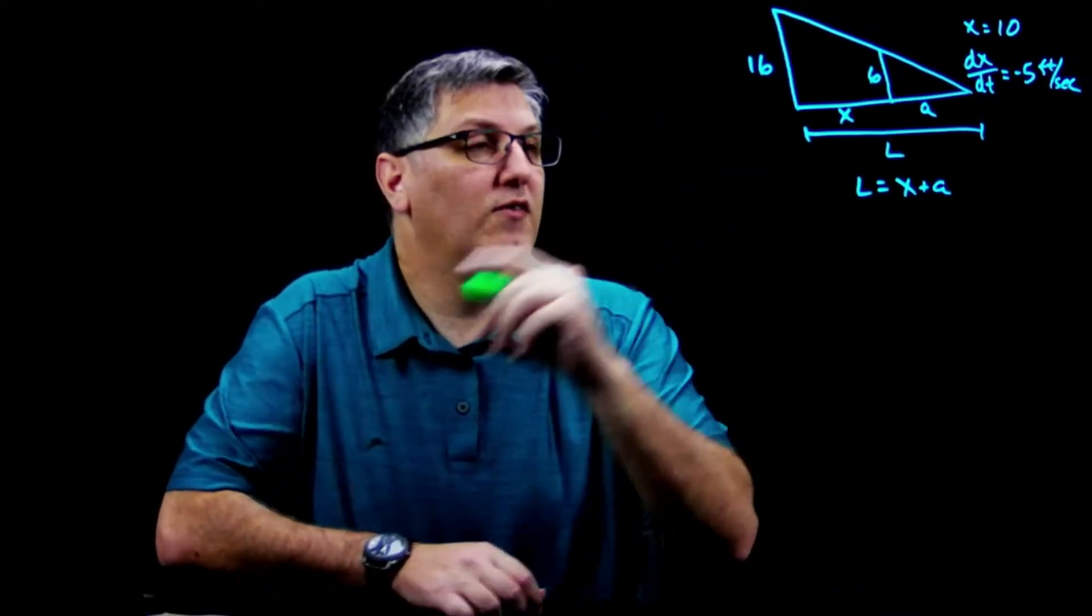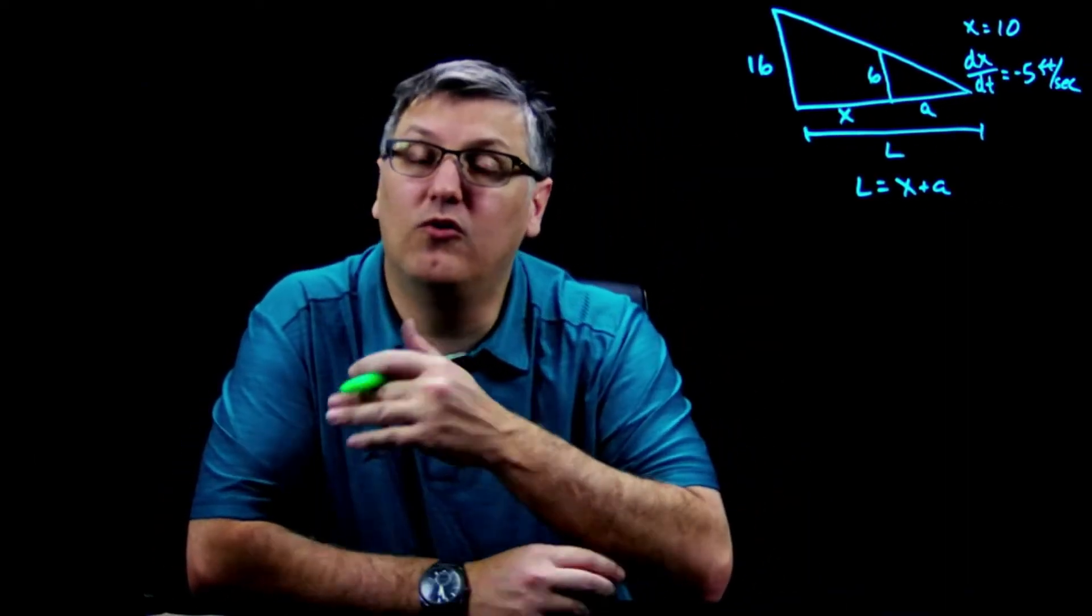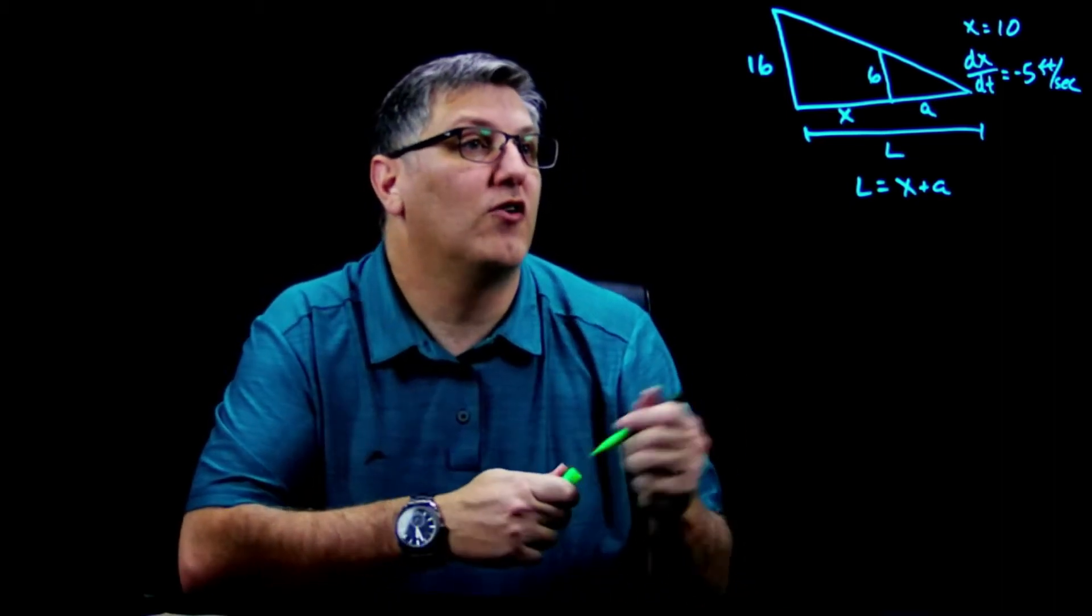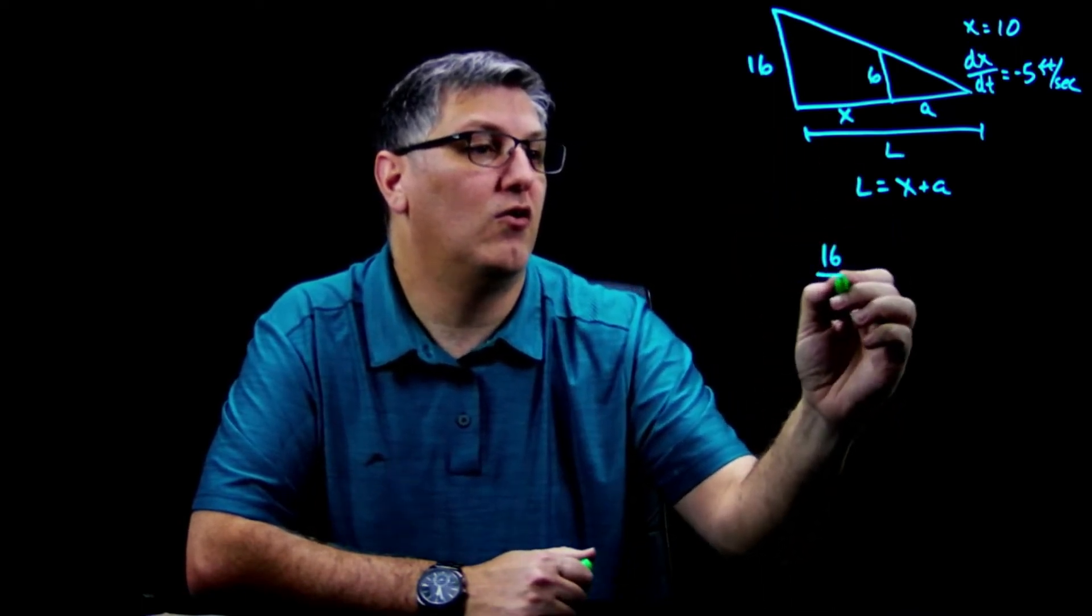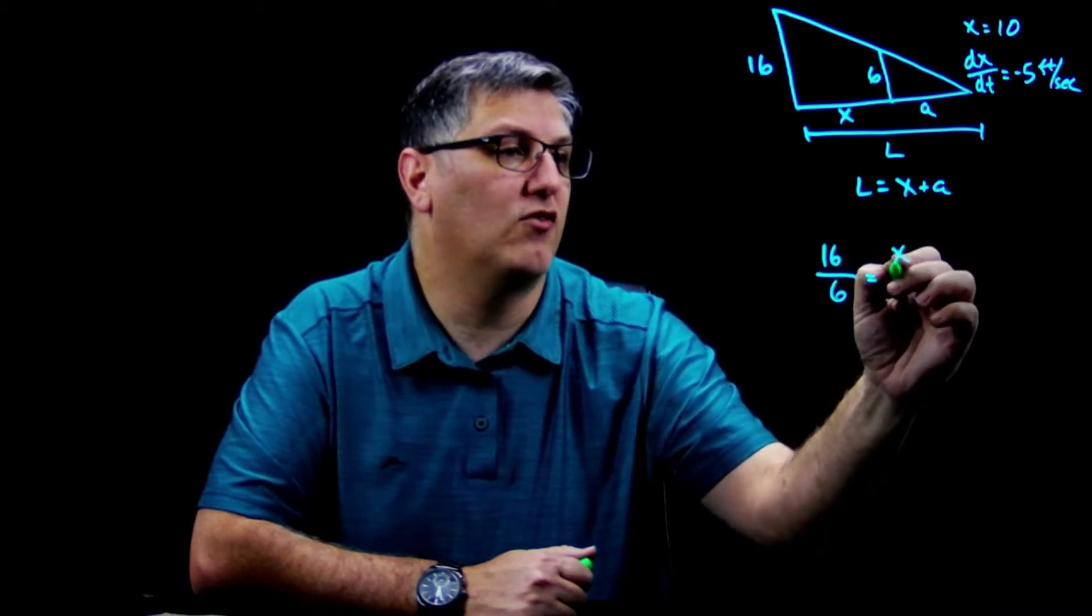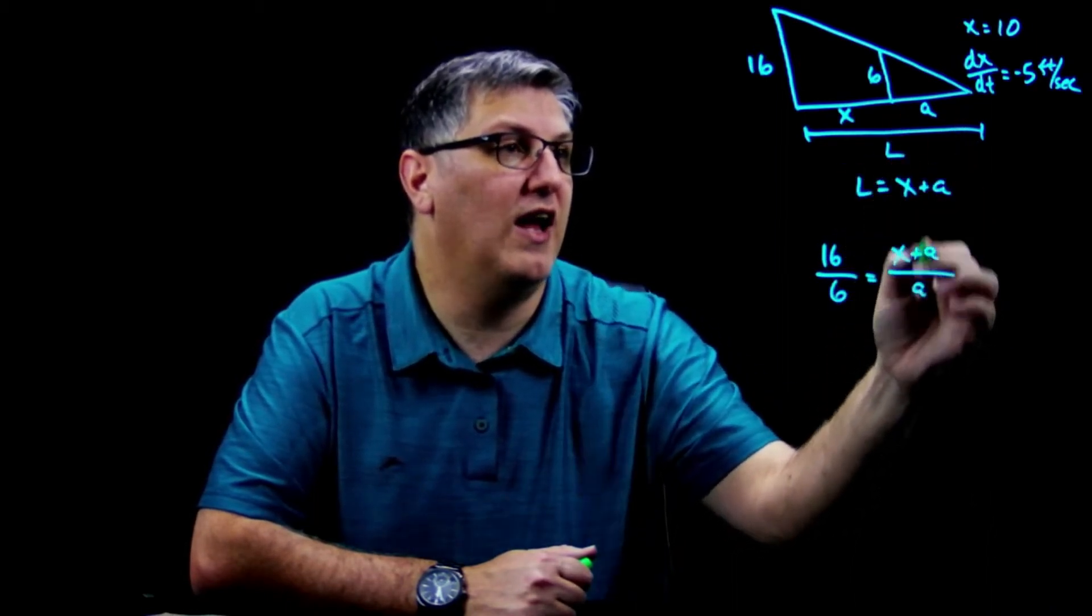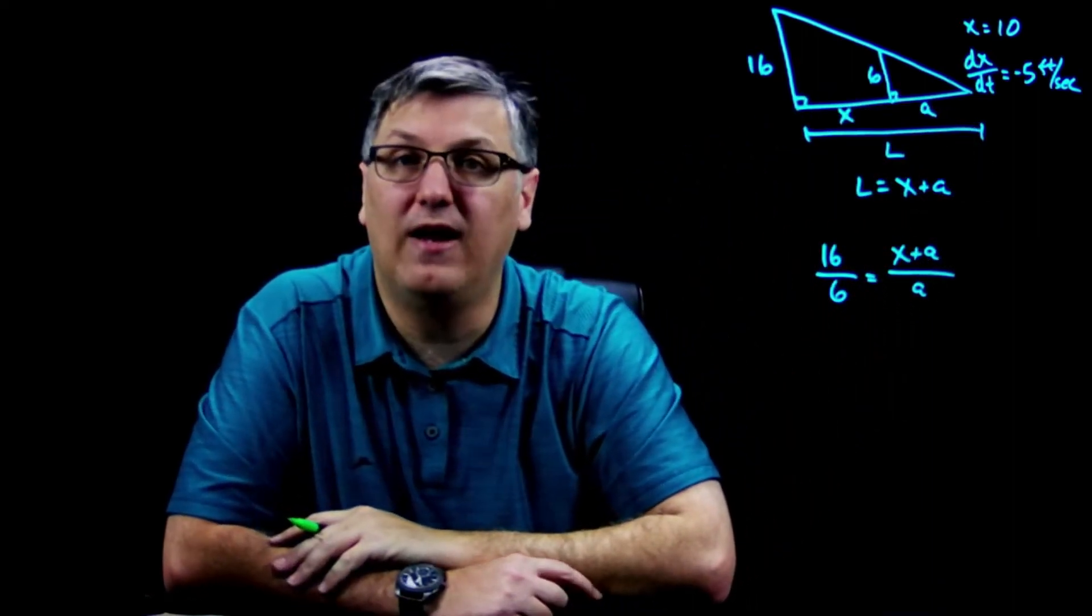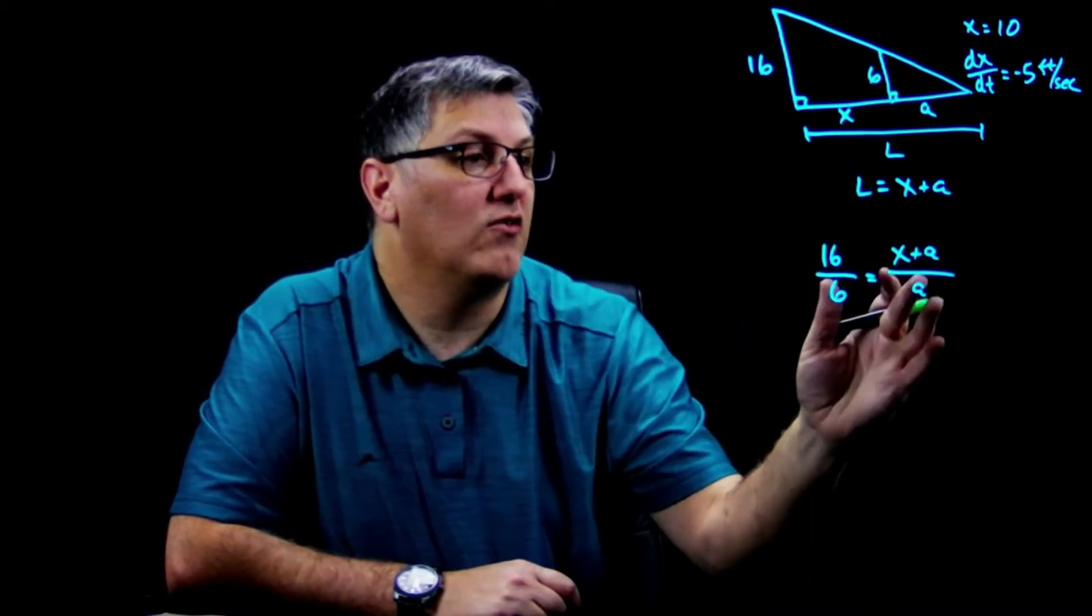All right, so we have another similar triangle here. And what I'm going to do is anytime I have a similar triangle, I'm going to set up the proportions. So I know that 16 over 6 equals my L, which is x plus a, so x plus a over the smaller part which is a. Now these are both we assume 90 degrees, so we have an angle-angle similarity.